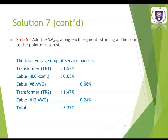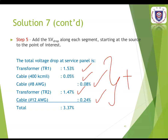The last step, same as single phase: sum all the percentages of voltage drop along each segment from source to load. Transformer TR1: 1.53%, cable 400 kcmil: 0.05%, cable 8 AWG: 0.08%, transformer TR2: 1.47%, cable 12 AWG: 0.24%. Sum all these to get the total voltage drop at the service panel for the three-phase system.